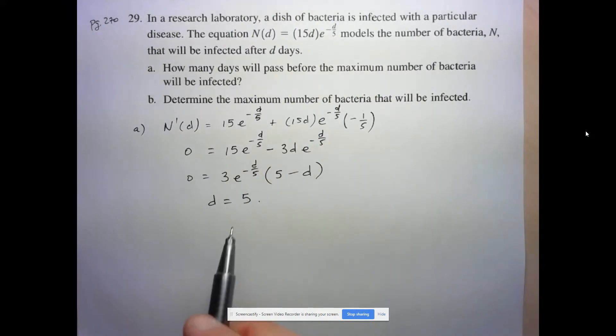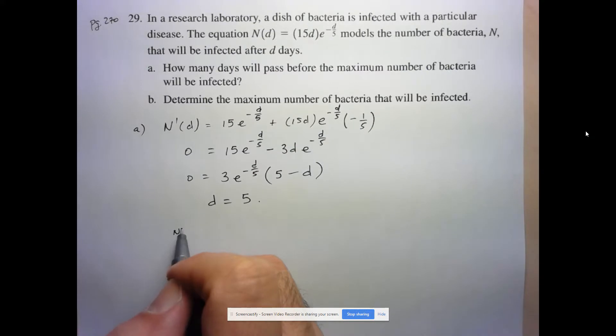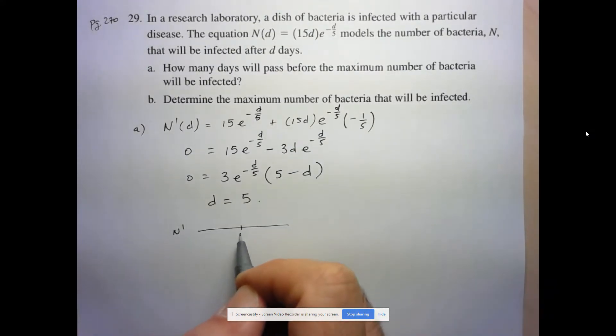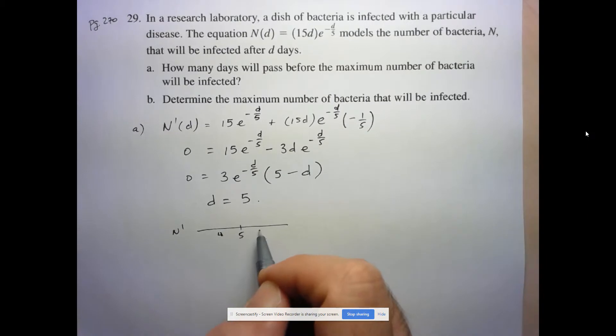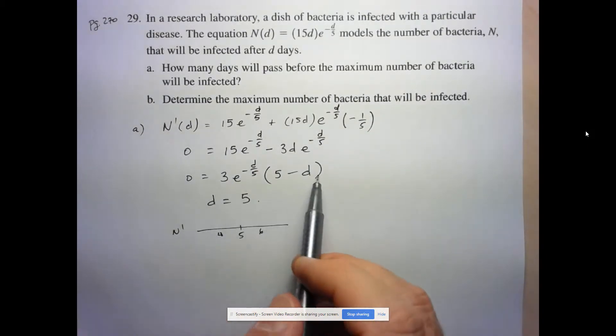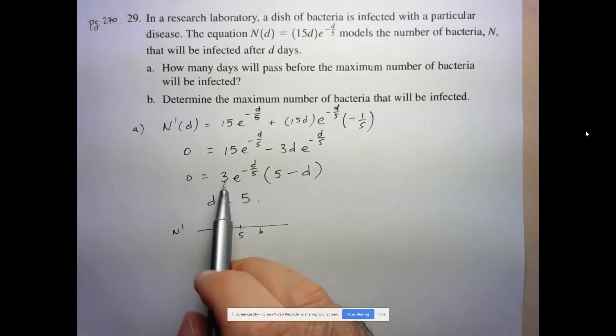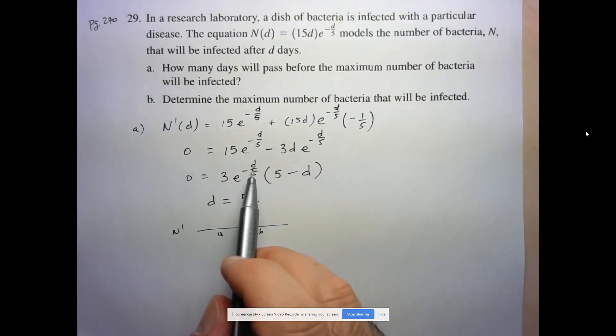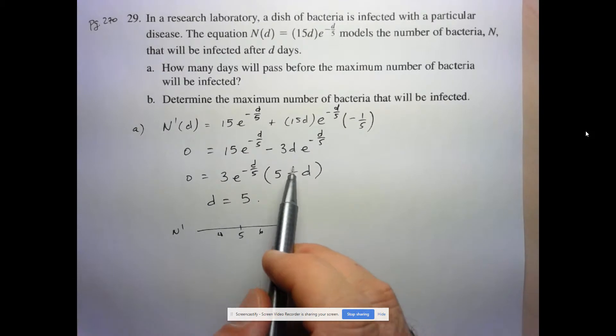We just have to check that 5 does indeed give us a maximum value. So let's check our derivative here at 5, and I'll take 4 on one side, 6 on the other. Now, this is our simplified form of the derivative. 3 is always positive. E to the negative D over 5 is always positive. So we only have to look at that linear factor there.